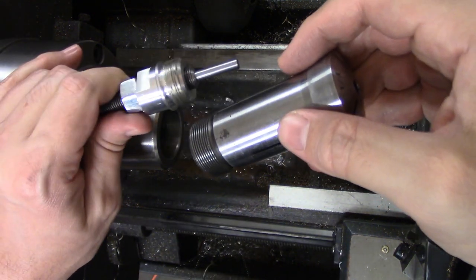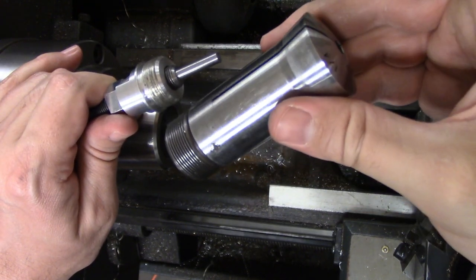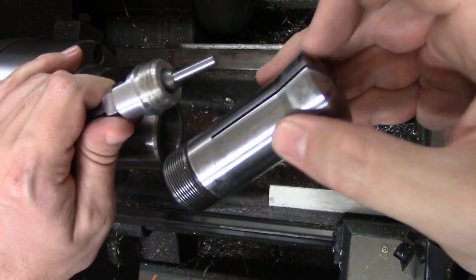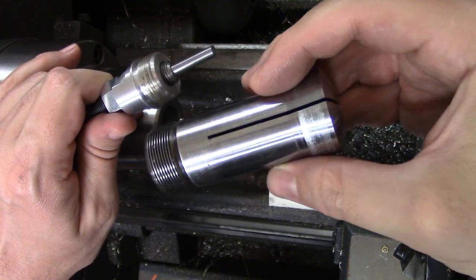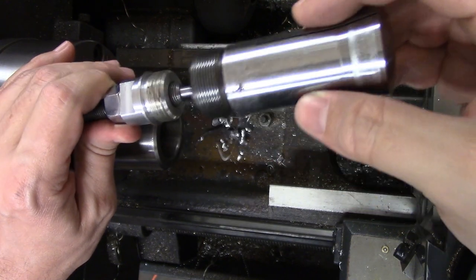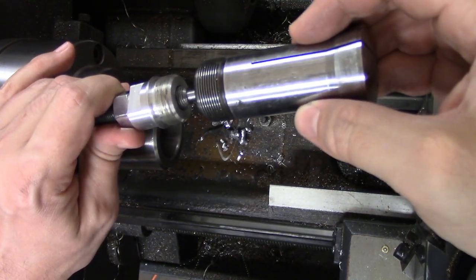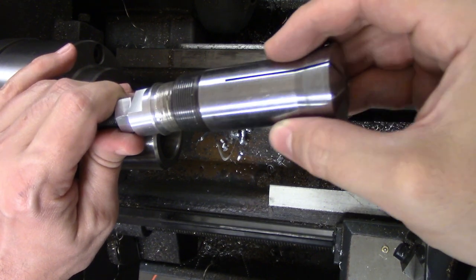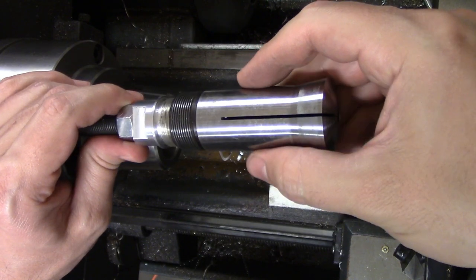One other really nice thing about 5C collets and collet stops is the sheer amount of tooling that uses 5C collets - collet blocks, various indexers, etc. You can still use your collet stop and in many cases you can just take it straight out of the lathe and put it into that tooling and then immediately go to town machining the milling operations on your part as well.